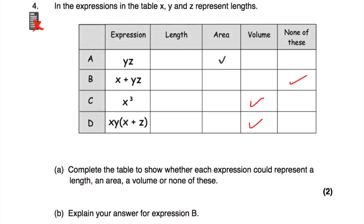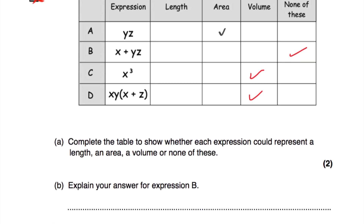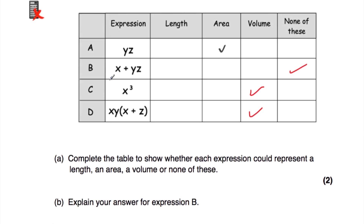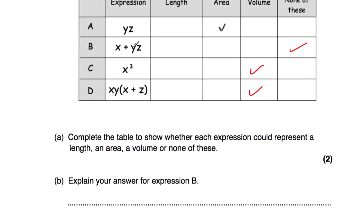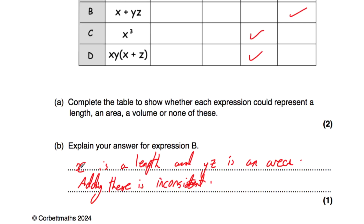Part B says explain your answer for expression B. We need to explain why it's none of these — why it's inconsistent. X is a length, and YZ is an area, so X + YZ means adding a length to an area, which is inconsistent. That's why it's none of these.